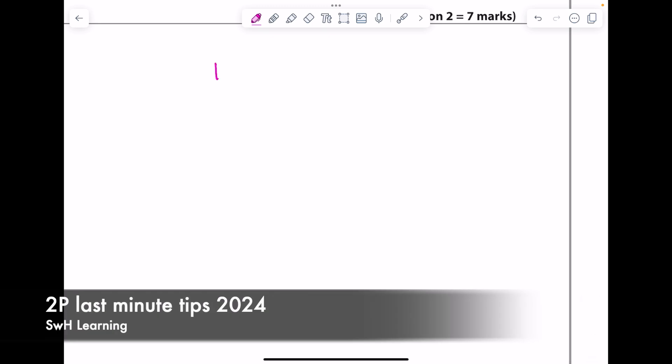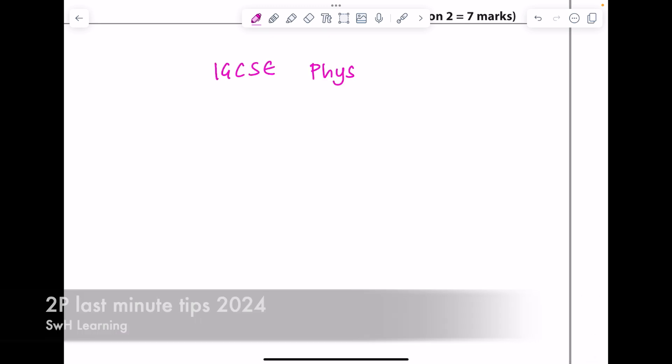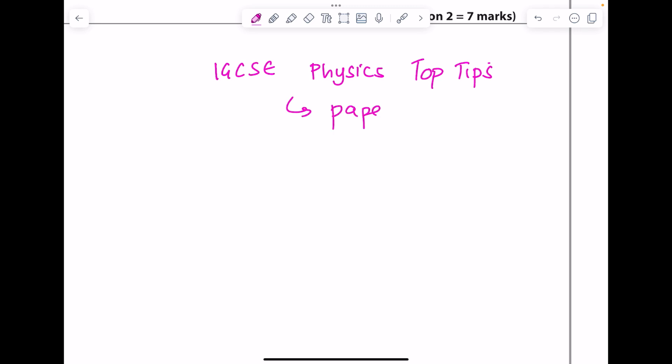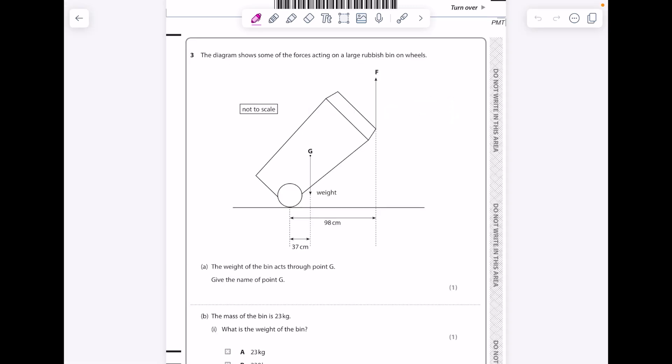I'm going to take you through some IGCSE physics last-minute tips for paper 2. We're going to look at a moments question. Remember, the principle of moments states that the clockwise moments equal the anti-clockwise moments. They could ask you that as a bold question, or if there's quite a long maths question, it's worth writing that in the beginning even if you have no idea what's going on because it tends to be worth a mark.